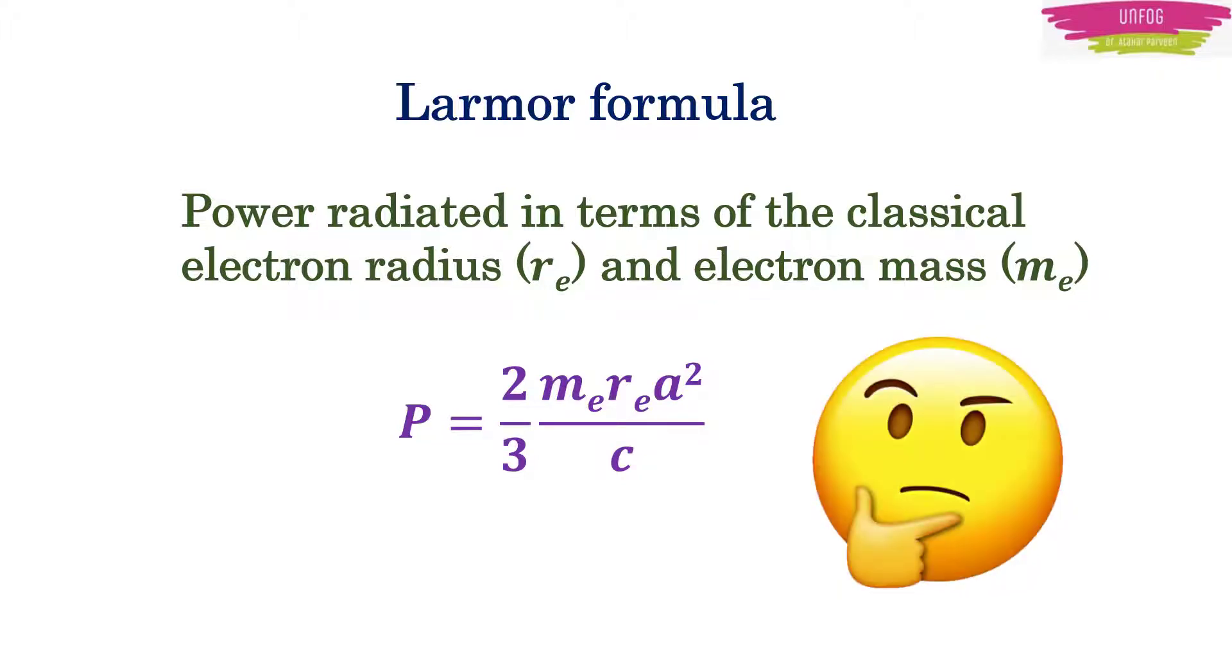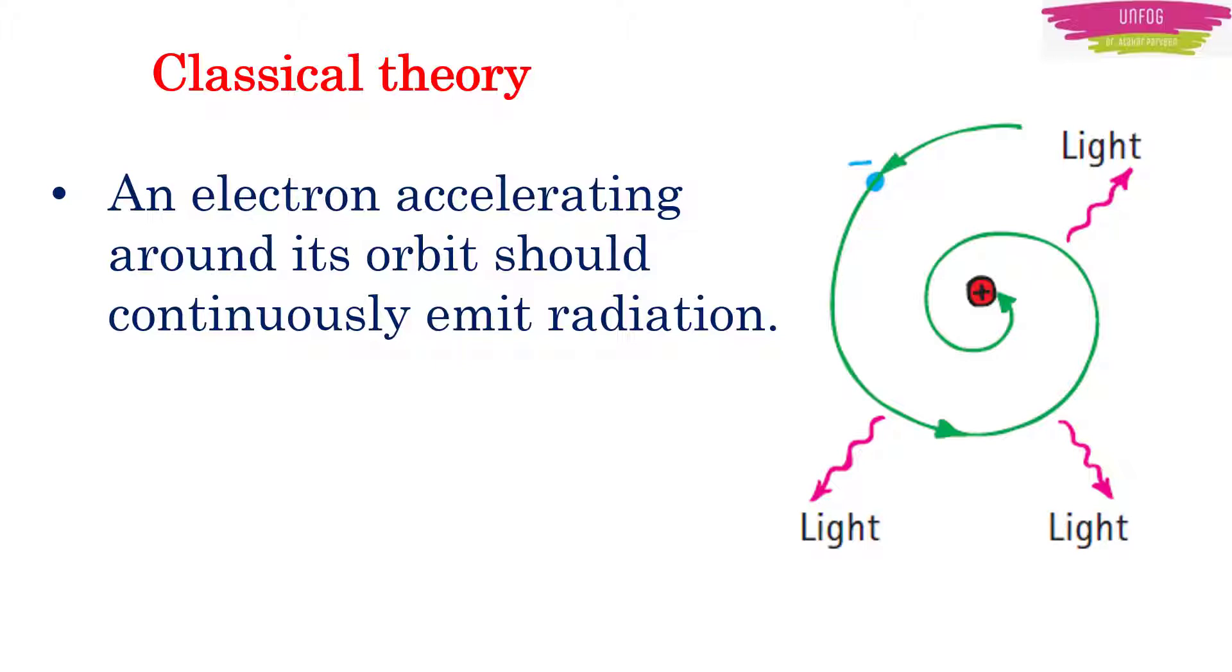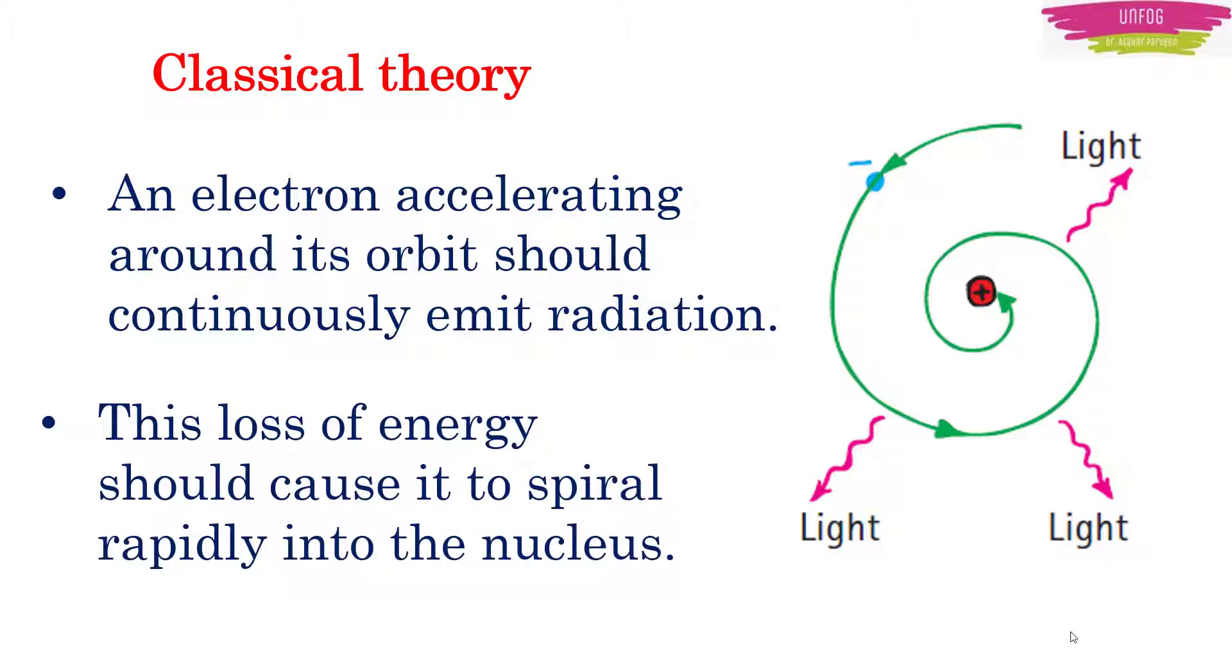Now this creates a problem here. Because if electron radiated energy, then its kinetic energy would decrease, electron would slow down and at one point of time, kinetic energy will be equal to zero and this loss of energy should cause electron to spiral rapidly into the nucleus and the atom should collapse.